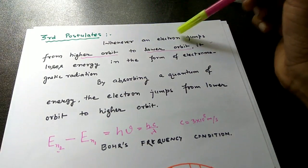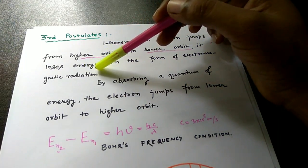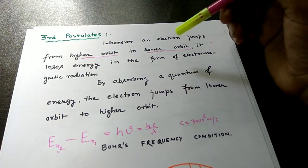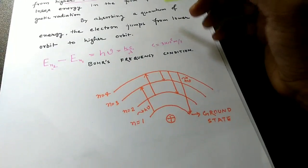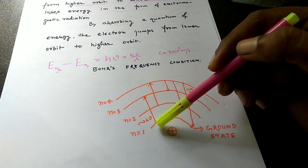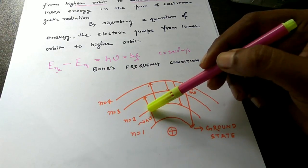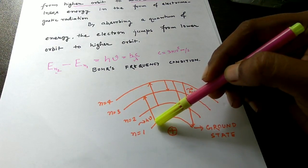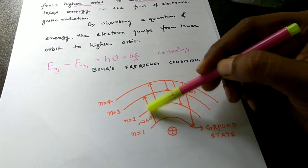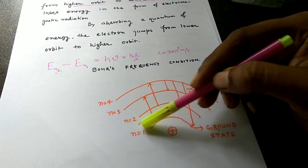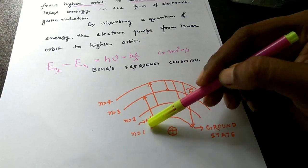The third postulate says: whenever an electron jumps from a higher orbit to a lower orbit, it loses energy in the form of electromagnetic radiation. By absorbing a quantum of energy, the electron jumps from a lower orbit to a higher orbit. For example, in an atom with four orbits shown — n = 1, 2, 3, and 4 — an electron moves from the first orbit to the third orbit only when it absorbs a quantum of energy equal to hν, where ν is the frequency and h is Planck's constant.